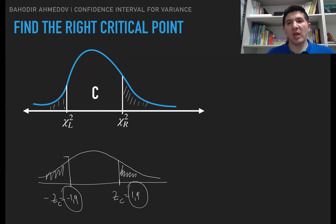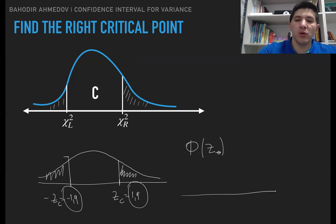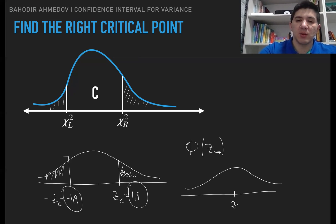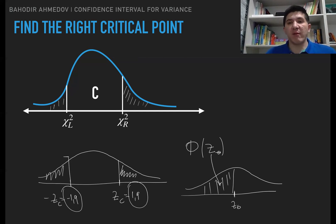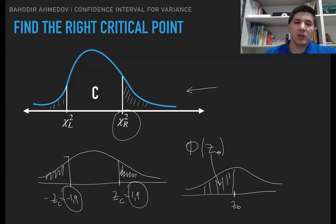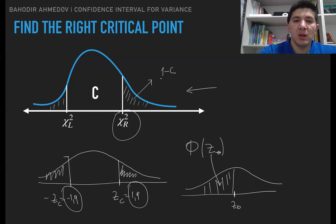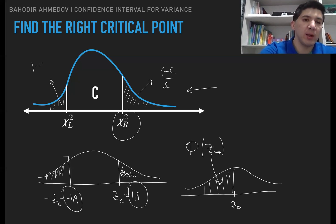We're going to use the chi-square table to find the critical points. For the z-distribution, the cumulative distribution function gives the area up to some point z0, measured from the left. For the chi-square distribution, we need to measure areas from the right. If the area in the middle is equal to C and the two tail areas are equal, then each tail area is going to be 1 minus C over 2.